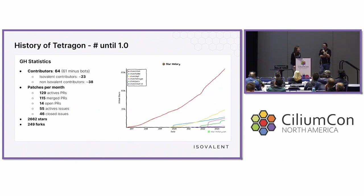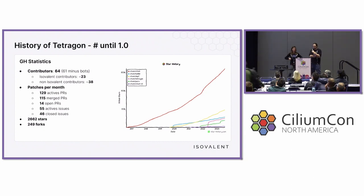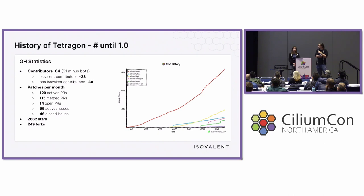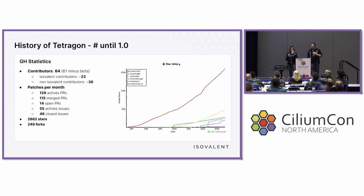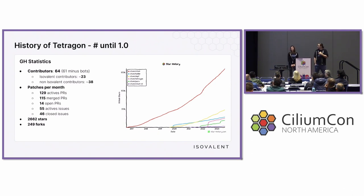A few GitHub statistics pulled from the 1.0 release. A couple of things stand out: even before the 1.0 release, we have 64 contributors, and what's really exciting is that there are actually more non-Isovalent contributors than Isovalent contributors — 23 from Isovalent and 38 from outside. From the project side, that's great. And if you look at patches per month and PRs, it's very active — 130-some-odd patches active right now. Definitely come to the GitHub page; we have first-issue tags and you can contribute.